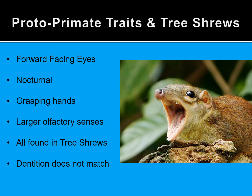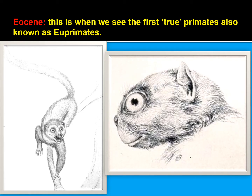Proto-primate traits that match tree shrews include forward-facing eyes, nocturnal behavior, grasping hands, and larger olfactory senses. However, the dentition doesn't match. Dentition is a very difficult system to change in evolutionary time — it is under very tight control by the genome. In order for a species to gain or lose teeth takes an absurd amount of time. We've had essentially the same number of teeth since Aelopithecines, our distant cousins. So teeth are a good thing to look at when trying to identify what a creature may be related to.